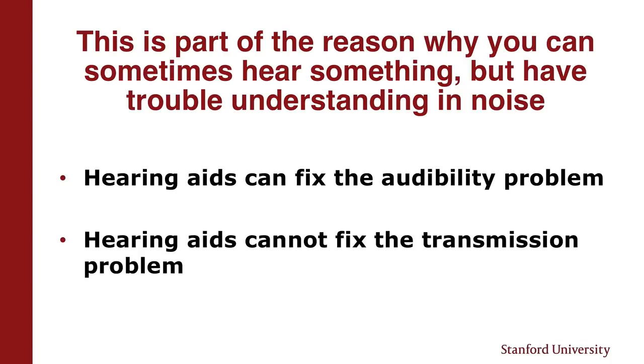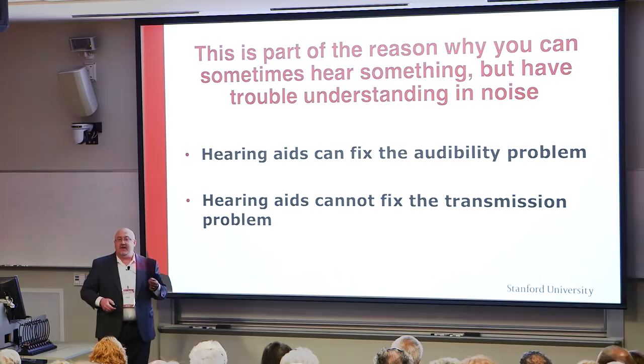So what about hearing aids? Hearing aids can fix the audibility problem — we can do that. But hearing aids can't necessarily fix the transmission problem. This is a known issue in the field. When people say, 'My hearing aids help, but they're not perfect' — this is why. Your ear is a nonlinear system; it's not like eyeglasses, where if I just change how the light reflects, it's suddenly perfect again. Because your ear is nonlinear, these transmission issues and signal quality issues remain. The people that make hearing aids and scientists like me are acutely aware of these issues. We know we can't necessarily fix it within the hearing aid itself — I can't magically restore the nerve fibers. Yet.